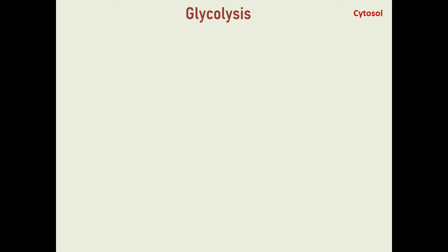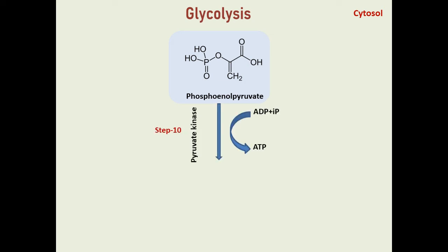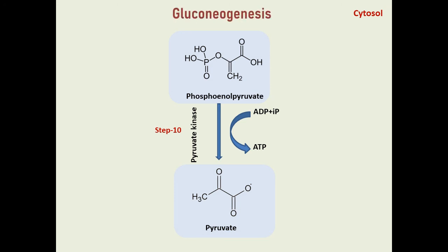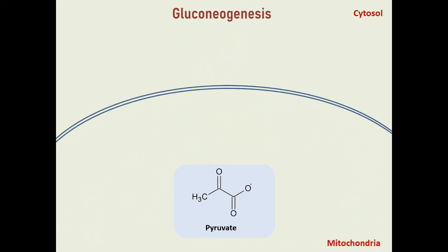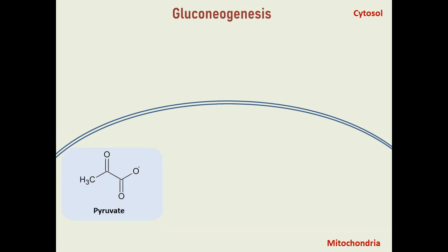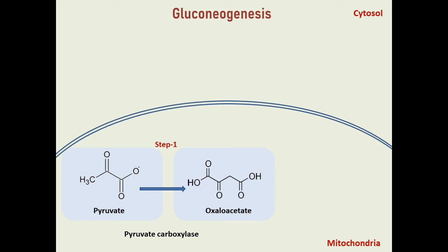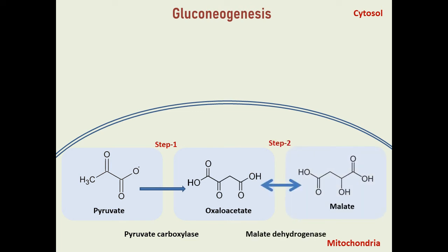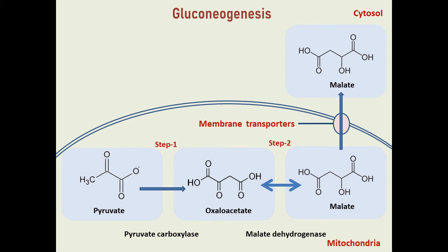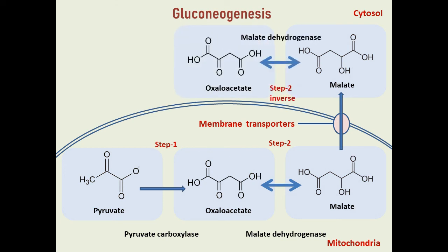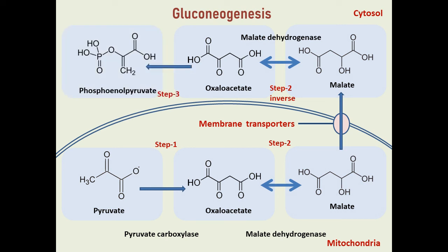The first step in gluconeogenesis is the conversion of pyruvate to phosphoenolpyruvate, requiring several steps and enzymes. Pyruvate carboxylase, PEP carboxykinase, and malate dehydrogenase are the three enzymes responsible for this conversion. Pyruvate carboxylase is found in the mitochondria and converts pyruvate into oxaloacetate. Because oxaloacetate cannot pass through the mitochondrial membrane, it must first be converted into malate by malate dehydrogenase. Malate can then cross the mitochondrial membrane into the cytoplasm, where it is converted back into oxaloacetate by another malate dehydrogenase. Finally, oxaloacetate is converted into phosphoenolpyruvate via PEP carboxykinase.